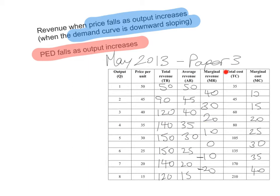You're also given the total cost curves, and from that you can calculate marginal cost, which is the change in total cost divided by the change in output. You can see that total revenue increases, but it doesn't keep increasing forever — eventually it reaches a maximum and then starts to decrease. Marginal revenue is always decreasing; it starts at 40 and keeps decreasing all the way to negative 20. Average revenue is always decreasing as well, because it is essentially the demand curve. This example was taken from the May 2013 Paper 3 exam published by the IB.